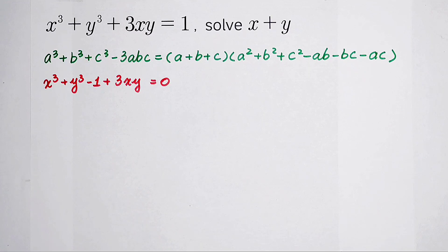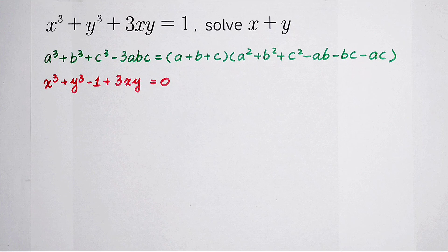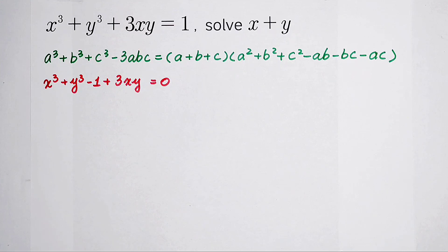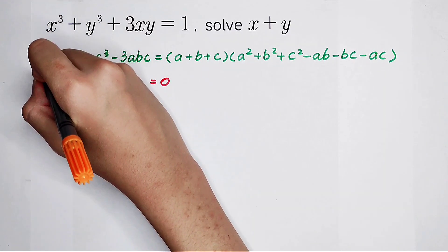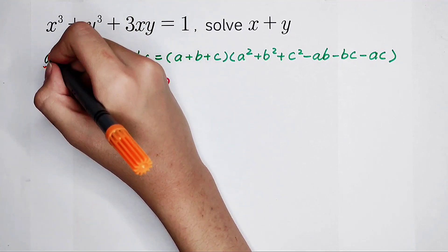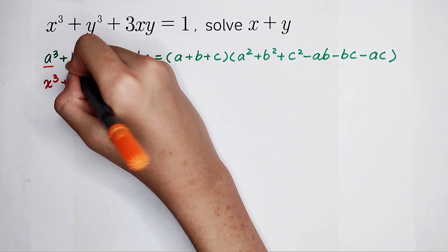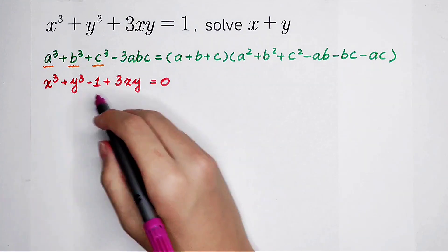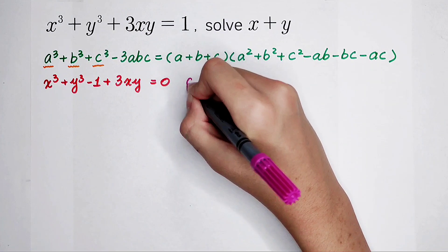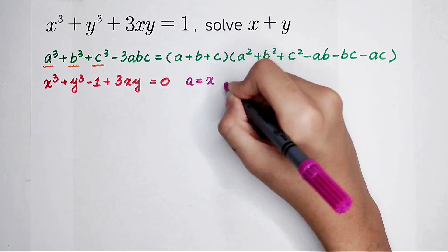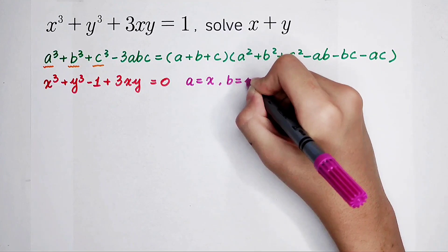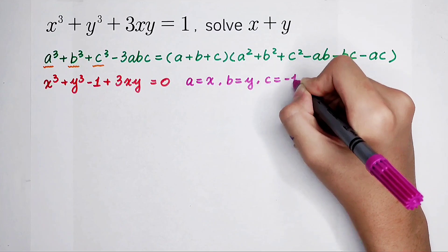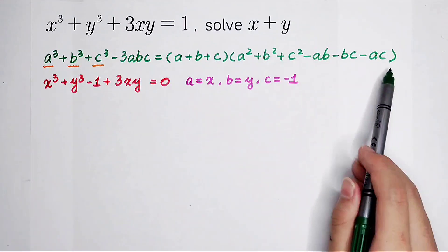So you can see in this question, what is a, what is b, and which is c? You'll find out. A is x, b is y, and c is negative 1. So in our question, a is x, b is y, c is just negative 1. This formula which was written in green, the left hand side, is factored.